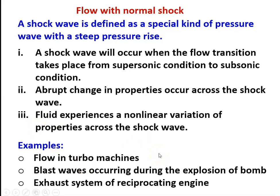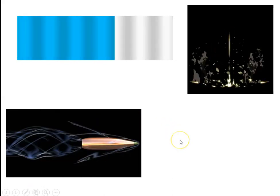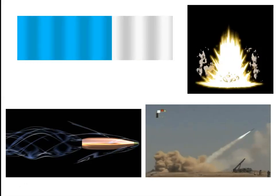Regarding the physical appearance of the shock wave: this is the normal shock, which is perpendicular to the direction of flow — this is a moving normal shock. This is the explosion of a bomb, where the shocks are oblique shocks. In this lecture we will be discussing the normal shock; in subsequent lectures we will deal with the oblique shock. This is a bullet released from a gun — you can find the shock waves. This is the flow of a missile, which causes tremendous pressure rise in the atmospheric air, also causing a shock wave.